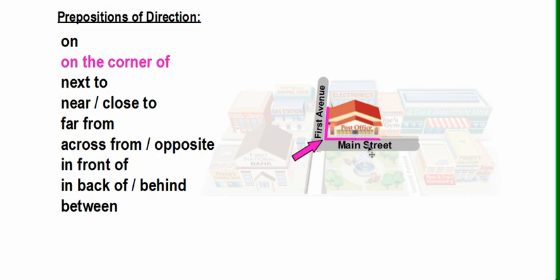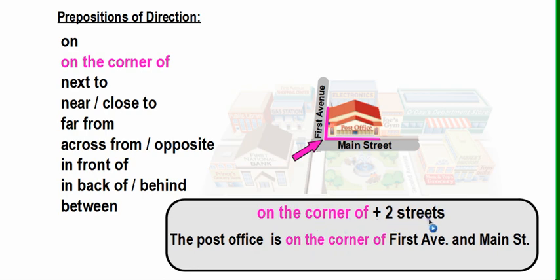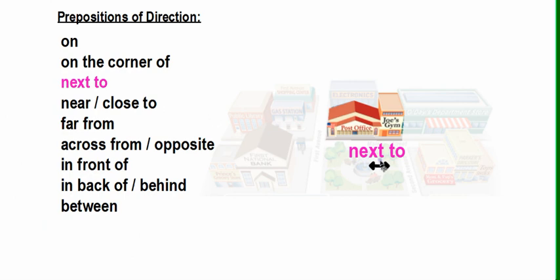Next, we have 'on the corner of.' Similar to 'on,' 'on the corner of' indicates where something is located, but it uses two streets. For example, the post office is on the corner of First Avenue and Main Street. When we use 'on the corner of,' we indicate two streets and the corner where the thing is located.